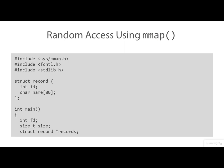Earlier in the lesson I showed you how to get random access into a file and do record-oriented updates using lseek, so I thought it might be interesting to revisit that using mmap. Here's just a sketch of the code. As before, we're defining a structure to define a record within the file, and here we're defining a pointer called records that is going to point to an array of records as we map the file in.